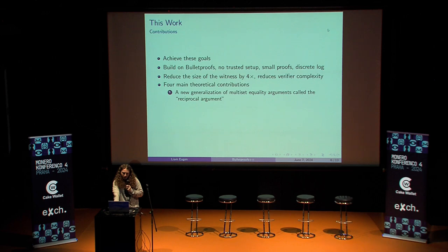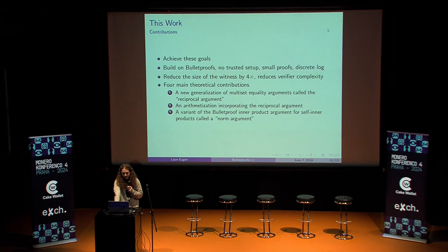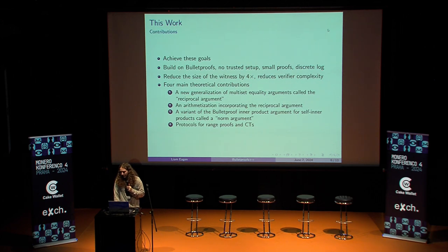We use the reciprocal argument to build range proofs, which allow us to prove that a value is in a range — necessary for proving that you don't have a negative amount — more efficiently. We also have a general form of adding the reciprocal argument to other circuits. We have a variation of the Bulletproofs inner product argument that's slightly smaller and helps us get the smallest proof sizes currently. And we use the arithmetization — this recipe for adding the reciprocal argument to circuits — to build the range proof, which is slightly different from how other Bulletproof-based constructions work, where you kind of build a range proof in a bespoke way.